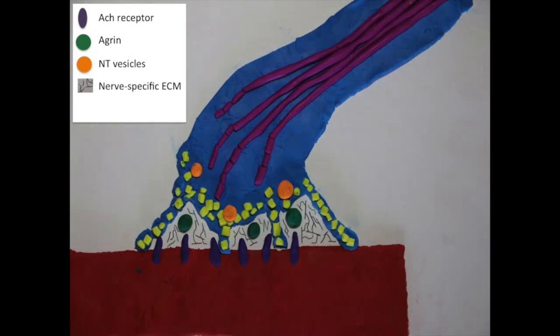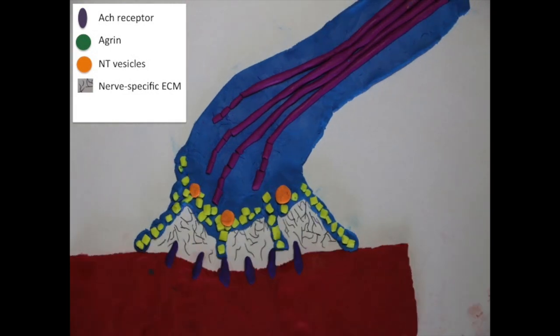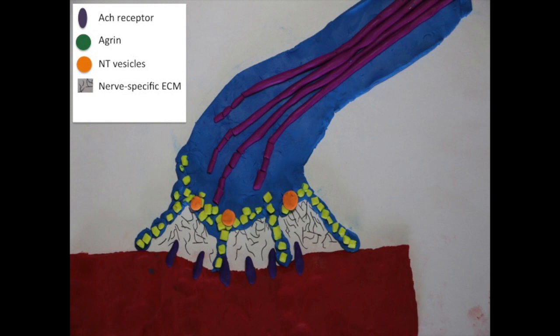Other axons begin to converge on the same synaptic site on the muscle, but the most active neuron ultimately outcompetes the others.